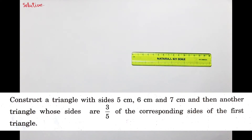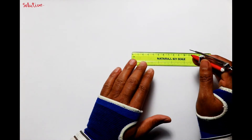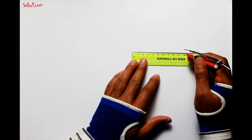इस question में आपको एक triangle बनाना है, 5, 6, 7 cm side का, और इसके ही similar एक दूसरा triangle बनाना है जो given triangle का 3/5 हो। तो सबसे पहले बच्चों हम triangle बनाएंगे जिसकी sides हैं 5, 6, 7।